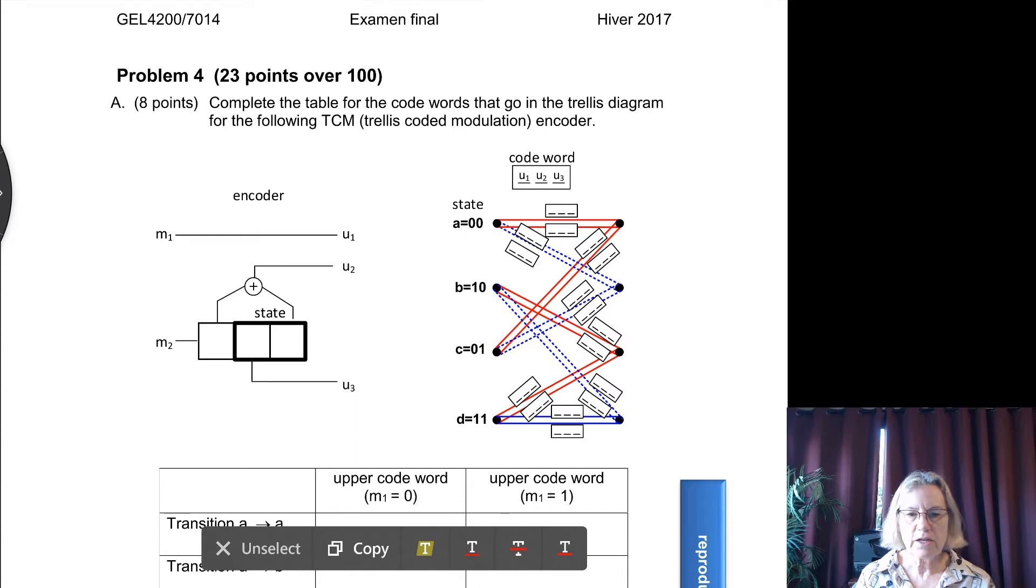So we're again looking at the final exam for 2017. We're now looking at problem 4 which involves trellis coded modulation, and the first part of the question asks us to complete the trellis diagram for this.